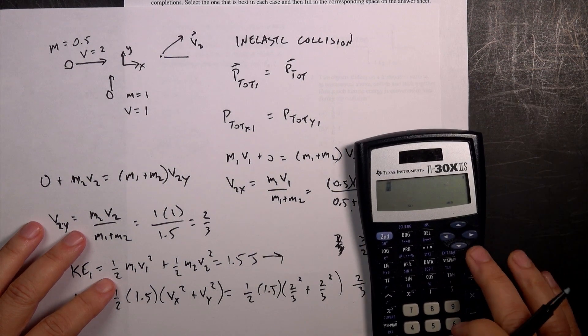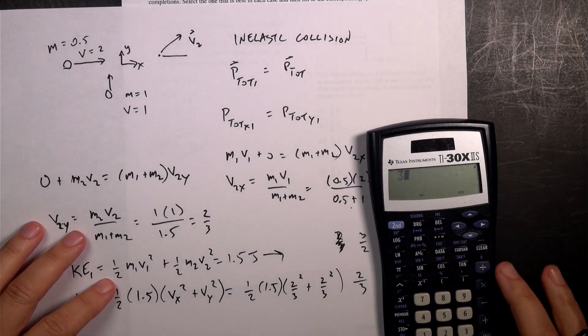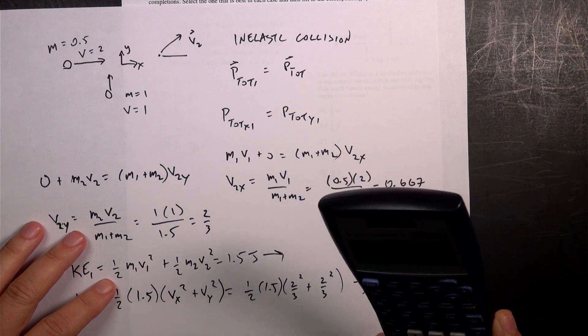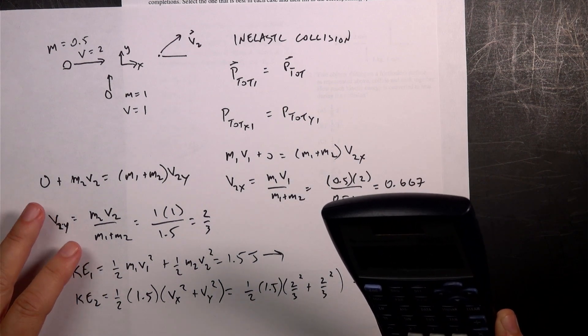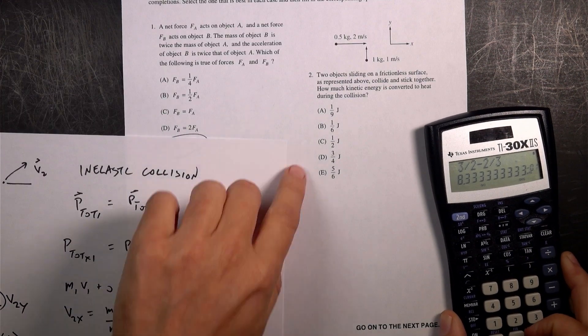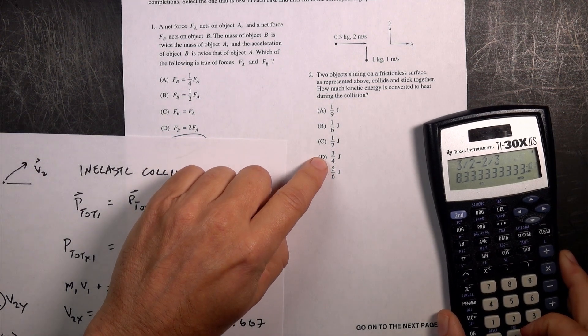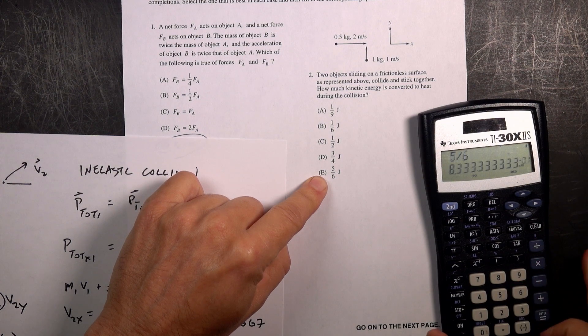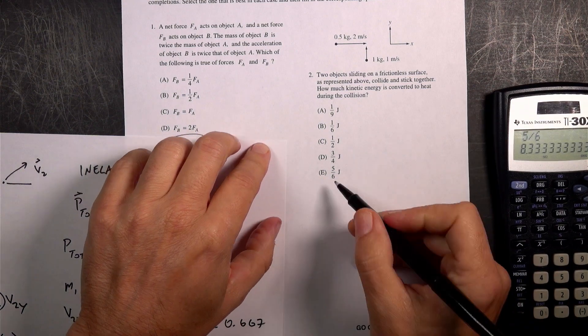So the change is going to be, let's just do the change, 3 halves minus 2 thirds. I get 0.833. So which one of these is 0.833? It's not that one. It must be this one. 5 divided by 6. Yeah. So I think it's that one.